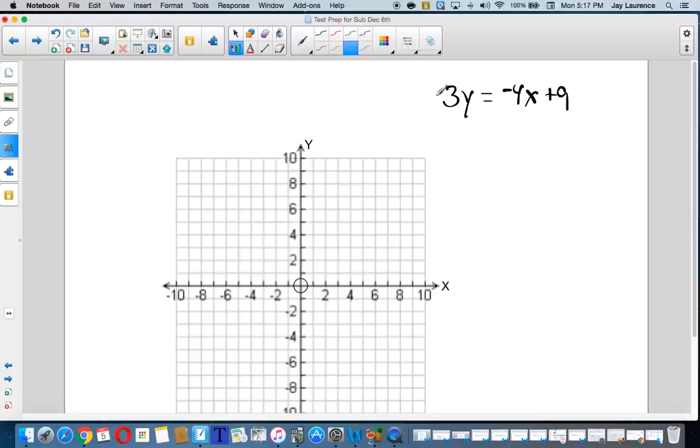Okay. Here comes my solution. Now, you remember, Ali was up at the board on Monday. And he had a situation where y wasn't alone, right? Okay. Well, y's not alone. There's a 3 attached to it. How am I going to get rid of that 3? Well, it's attached by multiplication. So I will divide. I will divide. I will divide. And my new equation will be y equals negative 4 thirds x plus 3.